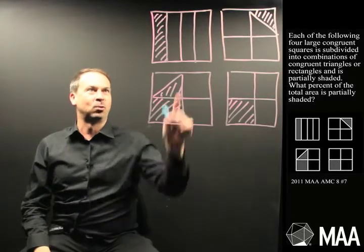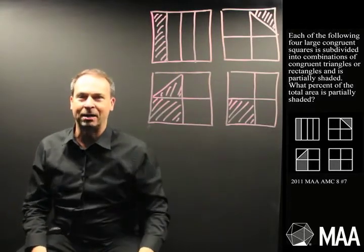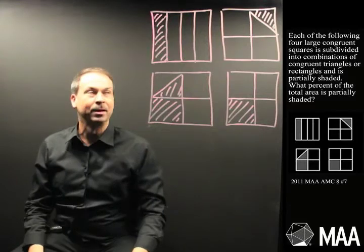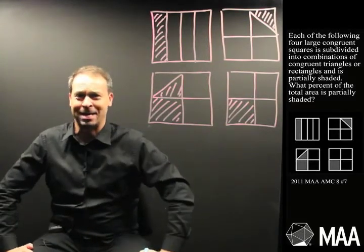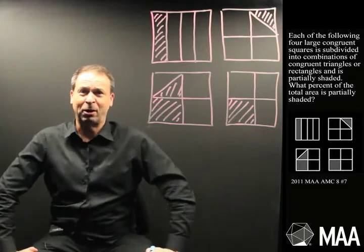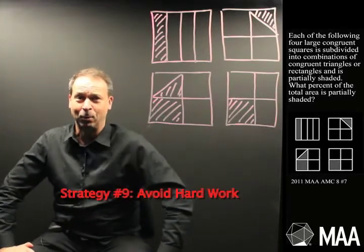All right, well, I could actually work out all these fractions of areas that are shaded and somehow add them up in the right way. When I add up percentages before, that didn't feel right, but maybe add up fractions, but that actually feels too hard. So what I'm going to do here is employ strategy number nine, which is to avoid hard work.